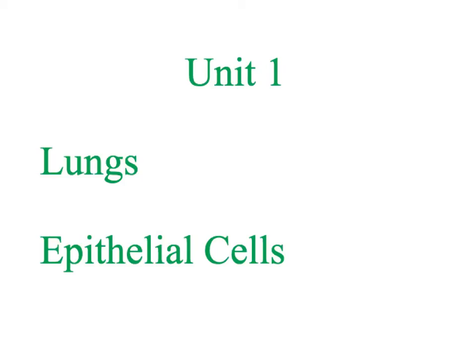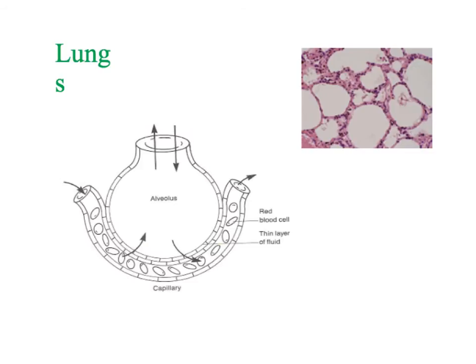The exchange surfaces you need to know for unit one are the lungs - so the alveoli - how oxygen gets into the blood, and the epithelial cells of the small intestine. The alveoli have many of the adaptations, so let's think about Fick's Law. First of all, surface area.